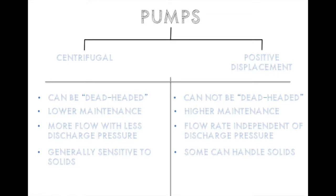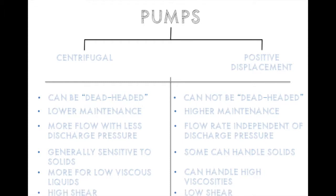Centrifugal pumps are generally more sensitive to solids. PD pumps can handle some solids — and by solids we mean like a paste or a slurry, as opposed to something very thin and watery like water. Centrifugal pumps are better for low viscosity liquids; PD pumps can handle higher viscosities. PD pumps have more shear to them, meaning more turbulent flow, and more turbulence can be bad for some liquids.